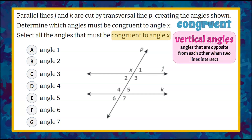First, let's review vertical angles. These are angles that are opposite from each other when two lines intersect. Here is a pair of lines that intersect. P and J are intersecting lines, and four angles are formed from those intersecting lines. We're going to focus on angle X because we want to determine which of these angles is congruent to angle X.